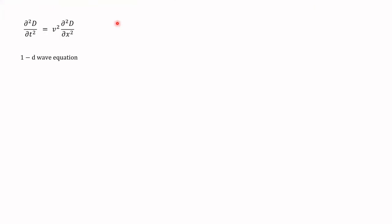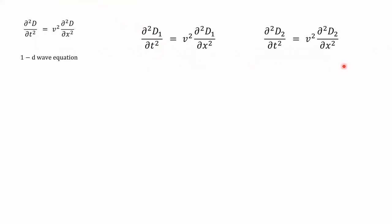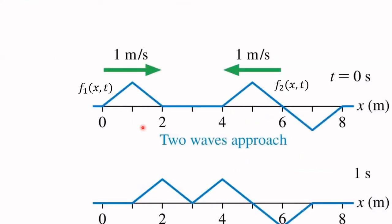If that's the case, let's find out whether the sum of the two signals also satisfies the wave equation. Because if the principle of superposition is legitimate — if it actually works for waves on a string — then the sum of the two functions, which is a third function, should also satisfy the wave equation. If it doesn't, the physics is telling us it's not possible for that signal to exist.